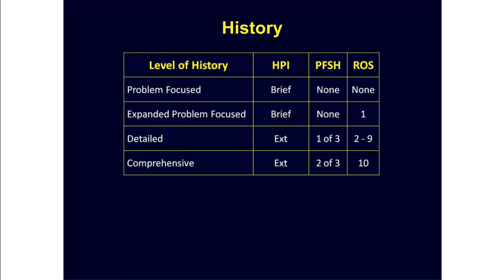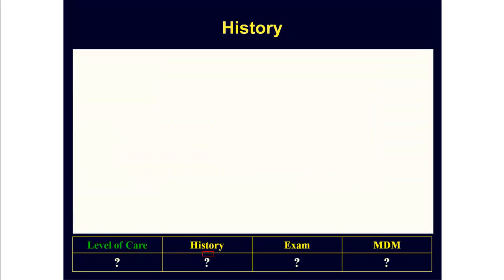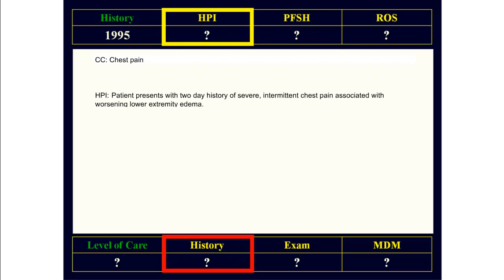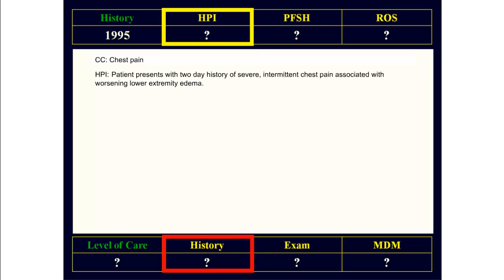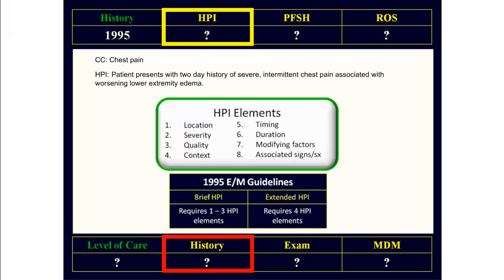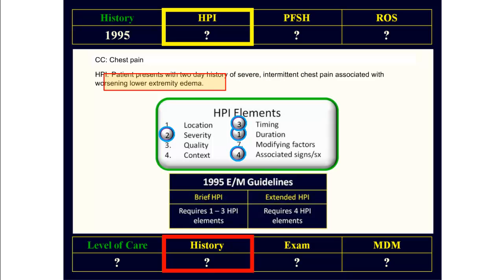Starting with the history, this is the table we use to figure out what level of history has been recorded. Here we have a valid chief complaint. Looking at the HPI, we see the patient presents with a two-day history of severe intermittent chest pain associated with worsening lower extremity edema. So here we've commented on the duration of the problem, the severity, the timing, and associated signs or symptoms. This adds up to four HPI elements, which means we qualify for an extended HPI.